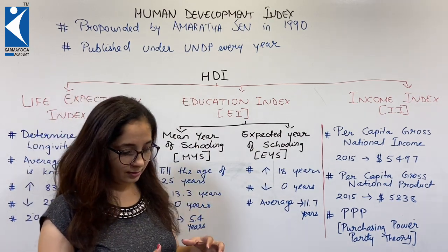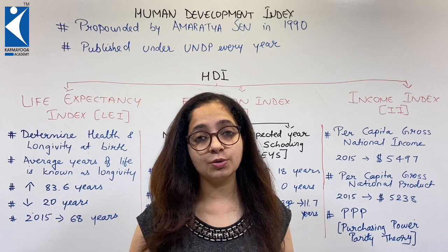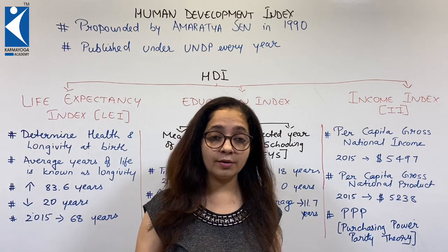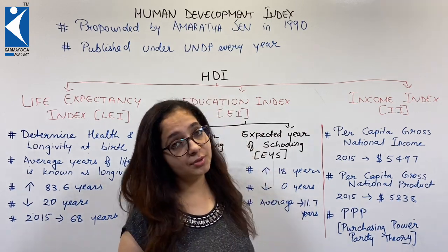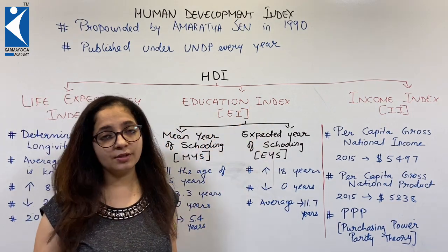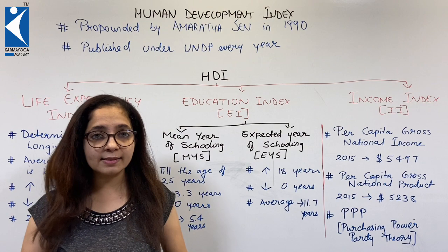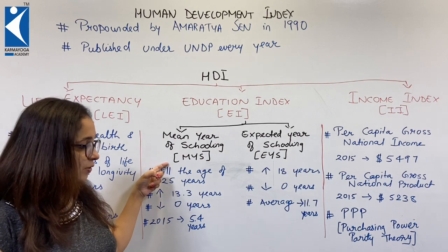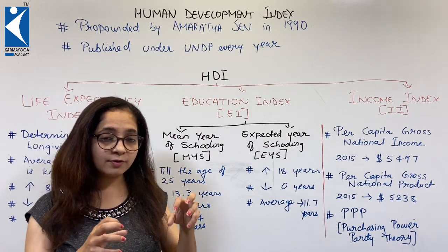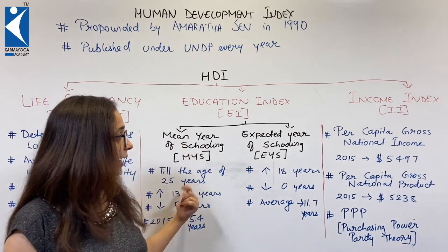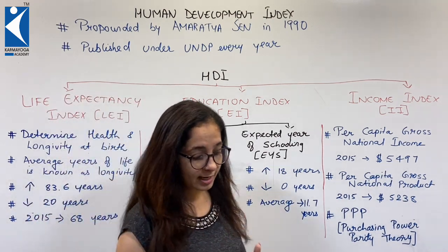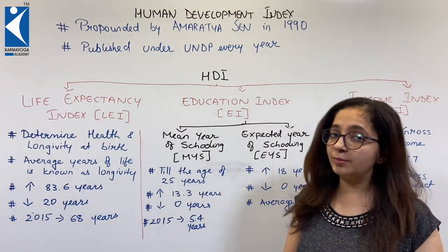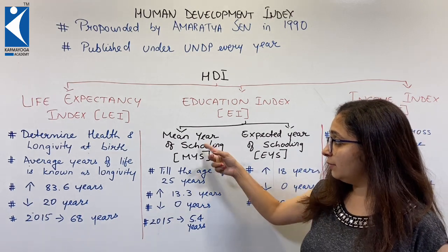For education, we first need to know what literacy is. Any person aged seven or above who knows how to read, write, and understand one language is known as literate. How much education a person receives is what the Education Index (EI) is about. It is divided into two areas: mean year of schooling and expected year of schooling.